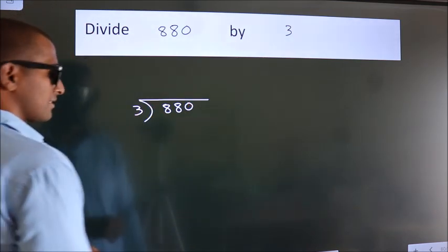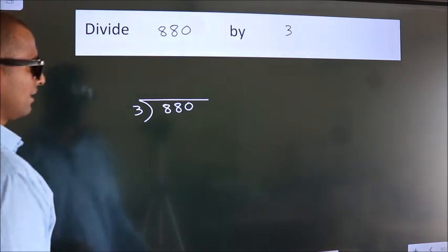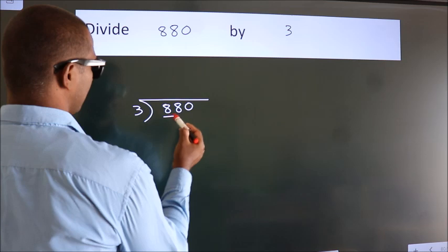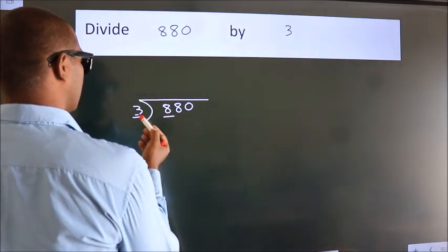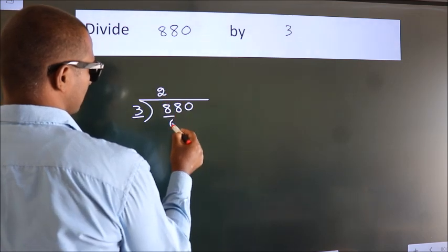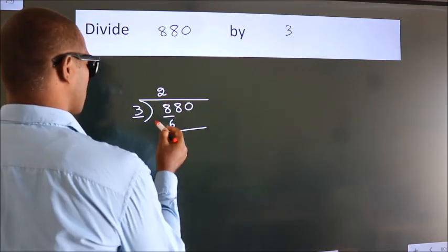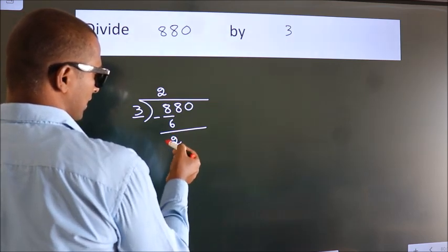This is your step 1. Next, here we have 8, here 3. A number close to 8 in 3 table is 3 times 2, which is 6. Now, we should subtract. We get 2.